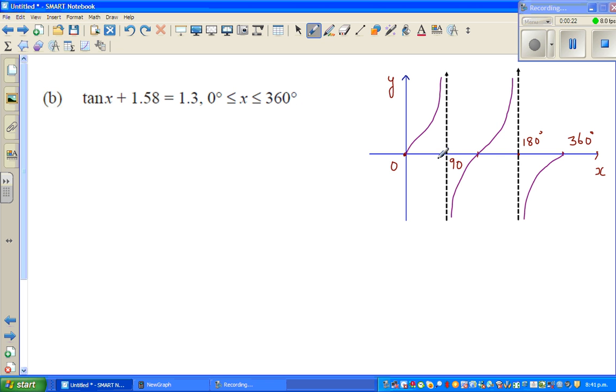Now this is a tan graph. As you know, if you draw the tan graph it has asymptotes at 90 degrees and 270 degrees. This is 270 degrees, this is 180 degrees, so this is the tan graph.